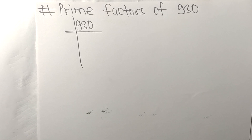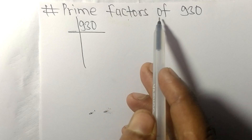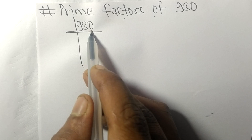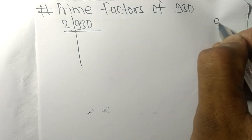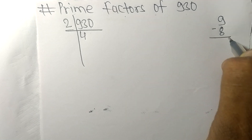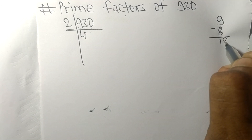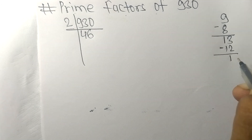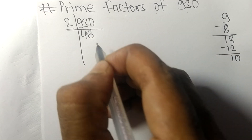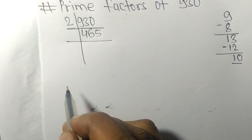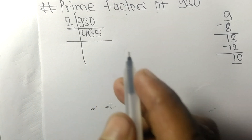Today we shall learn to find the prime factors of 930. Since it contains 0 at the last, it is exactly divisible by 2. Dividing: 2 times 4 is 8, subtracting gives 1, bring down 3 to get 13. 2 times 6 is 12, subtracting gives 1, bring down 0 to get 10. 2 times 5 is 10, so now we get 465.